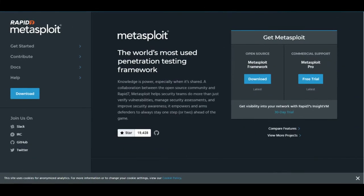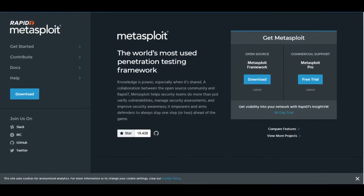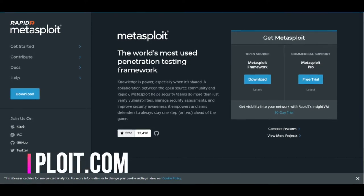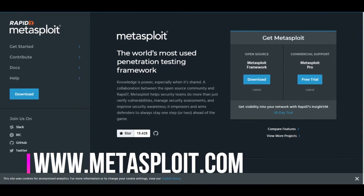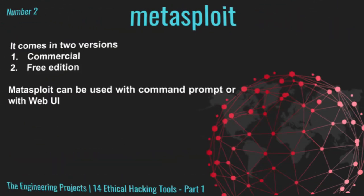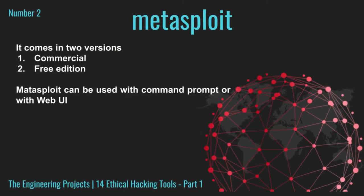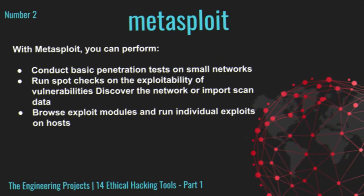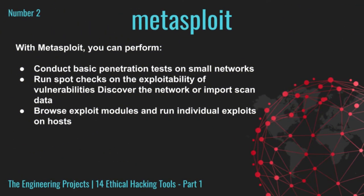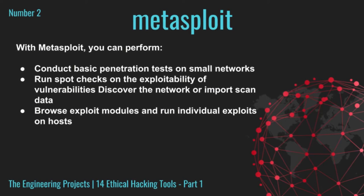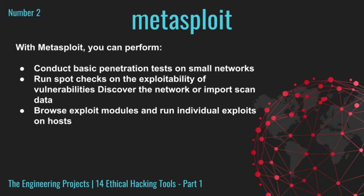Number two: Metasploit is one of the most powerful exploit tools. It is a product of Rapid7 and most of its resources can be found at www.metasploit.com. It comes in two versions — commercial and free edition. Metasploit can be used with command prompt or with web UI. With Metasploit, you can conduct basic penetration tests on small networks, run spot checks on the exploitability of vulnerabilities, discover the network or import scan data, and browse exploit modules and run individual exploits on hosts.